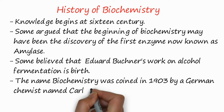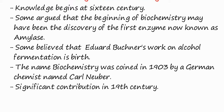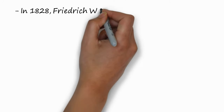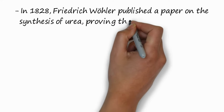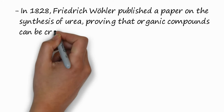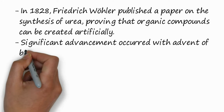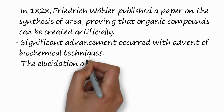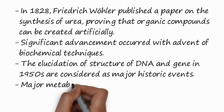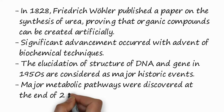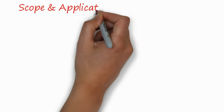However, the name biochemistry was coined in 1903 by a German chemist named Carl Neuberg. Significant contribution in biochemistry occurred in the 19th and 20th centuries. In 1828, Wöhler published a paper on the synthesis of urea, which proved that organic compounds can be created artificially without cells. The elucidation of the structure of DNA and genes in the 1950s is considered a major historic event. Major metabolic pathways were discovered at the end of the 20th century.